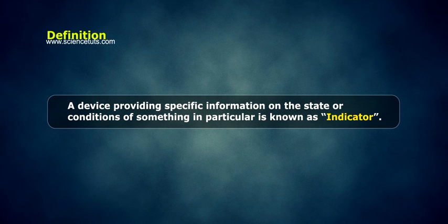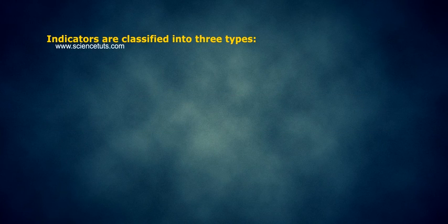A device providing specific information on the state or conditions of something in particular is known as an Indicator. These Indicators are classified into three types.